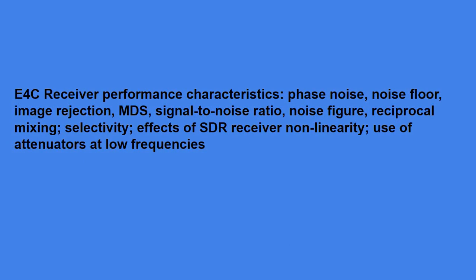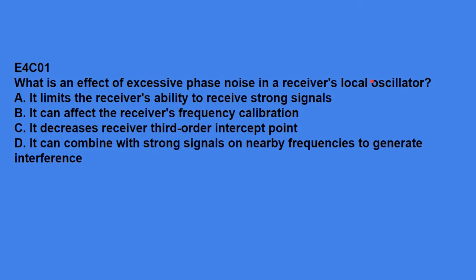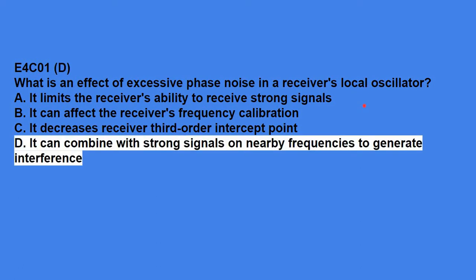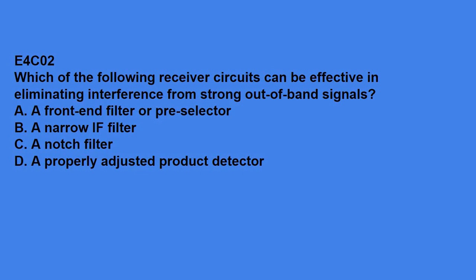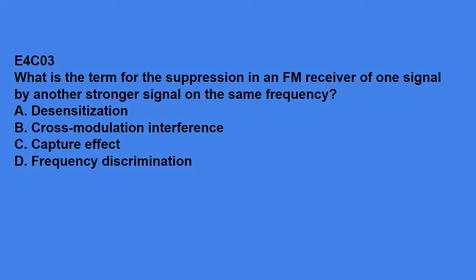E4C covers receiver performance characteristics, phase noise, noise floor, image rejection, MDS, signal-to-noise ratio, noise figure, reciprocal mixing, selectivity, effects of SDR receiver non-linearity, and use of attenuators at low frequencies. E4C01, what is an effect of excessive phase noise in a receiver's local oscillator? Answer is, D, it can combine with strong signals on nearby frequencies to generate interference. E4C02, which of the following receiver circuits can be effective in eliminating interference from strong out-of-band signals? Answer is, a front-end filter or pre-selector. E4C03, what is the term for suppression in an FM receiver of one signal by another stronger signal on the same frequency? Answer is, capture effect.